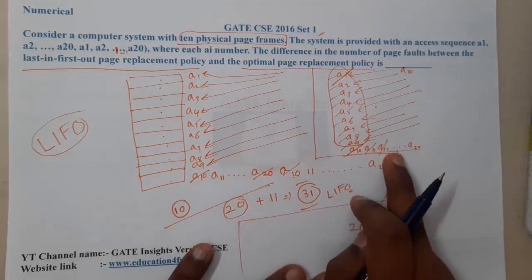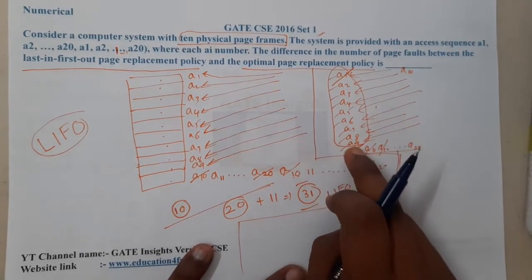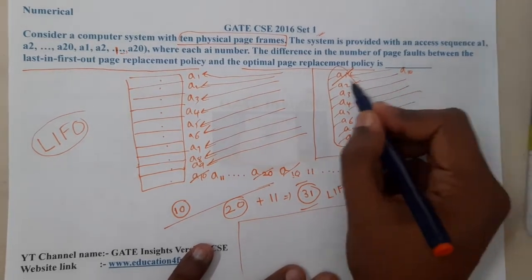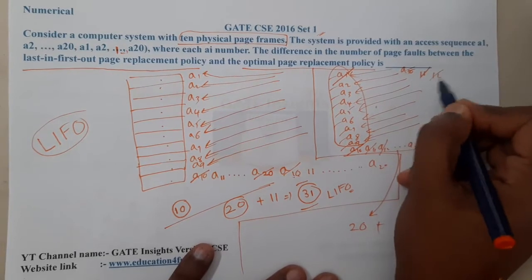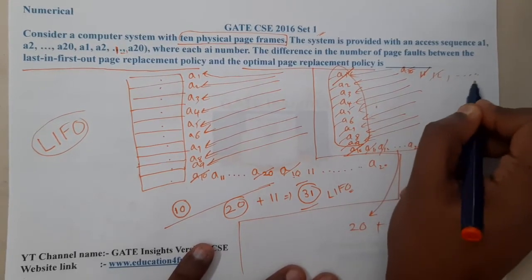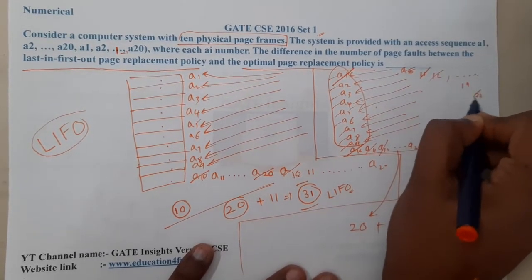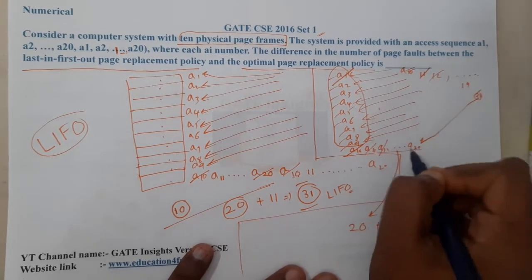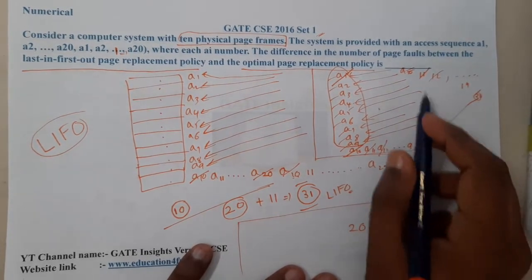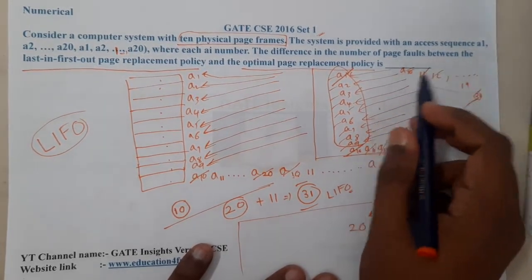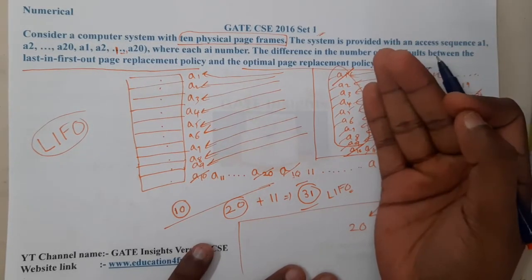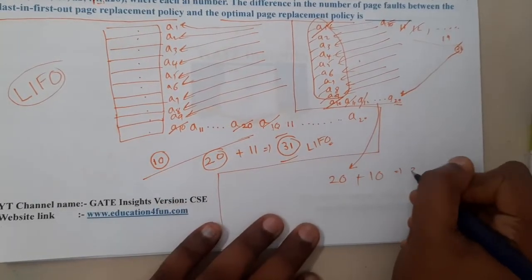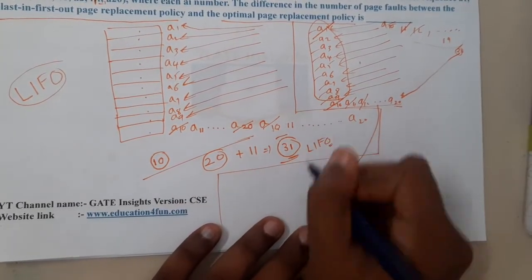Continuing, among the remaining frames, pages not appearing in the future are replaced. So a10 through a19 each cause a fault — that is 10 additional faults. When a20 is accessed, it is already in the frame, so it is a hit. Total faults for Optimal = 20 + 10 = 30.